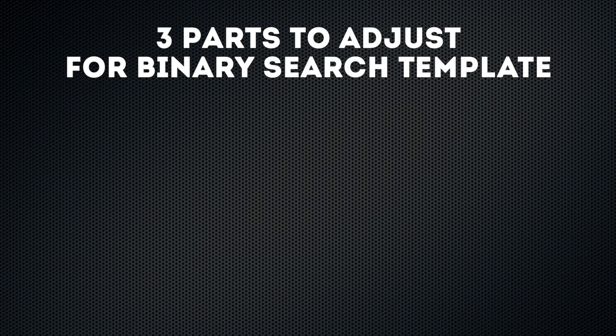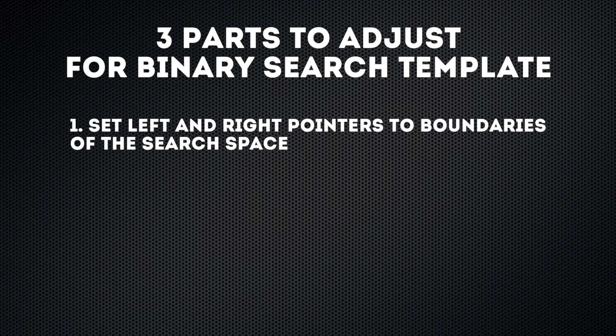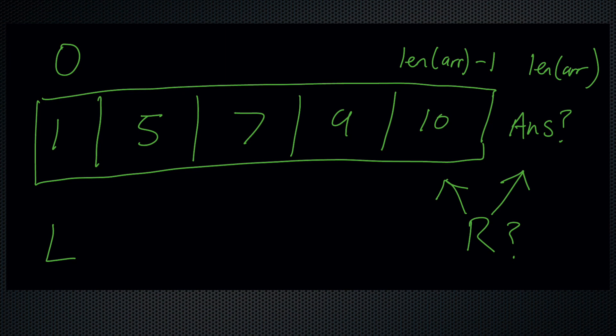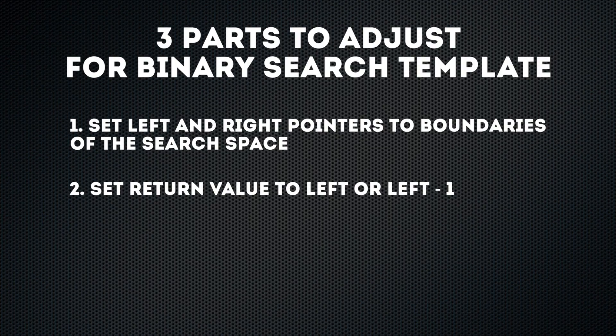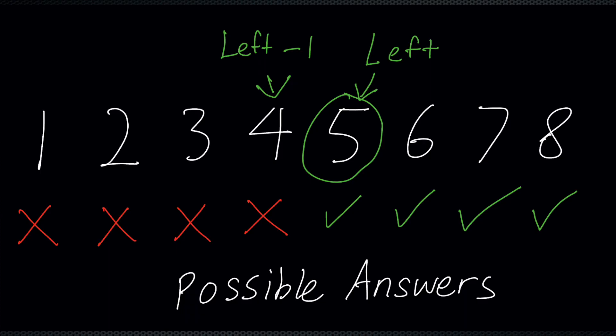So for every binary search problem, adjust the left and right pointer of the search space. Sometimes if the answer could be outside the given array, you may need to add a plus one to the right pointer. Also know that the return value is either left or left minus one, knowing that left is the last minimal value satisfying the condition function.